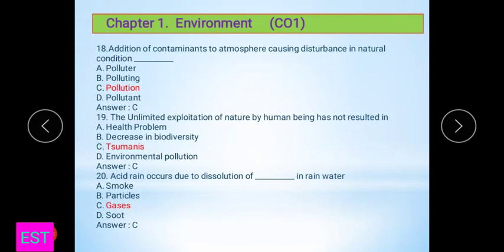Eighteenth question: Addition of contaminants to the atmosphere causing disturbance in natural conditions is called pollution. Next, unlimited exploitation of nature by human beings has not resulted in tsunami. The acid rain occurs due to dissolution of gases in rainwater, such as SO2 and NOx. These gases dissolving in rainwater cause acid rain.